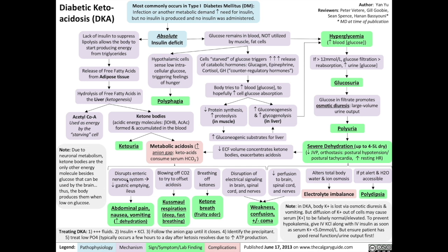The increased acidification of the blood has a number of effects on the body. First, acidosis disrupts the enteric nervous system, which reduces gastric emptying, potentially even causing an ileus. That causes abdominal pain, nausea, and vomiting, which in turn worsens the dehydration that is part of diabetic ketoacidosis. The body will reflexively compensate by trying to blow off carbon dioxide — since carbon dioxide is acidic, breathing off more of it will offset the acidosis. This results in a characteristic pattern of breathing known as Kussmaul respiration: a deep and fast breathing pattern.